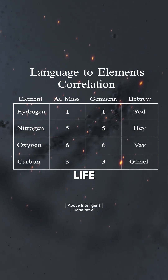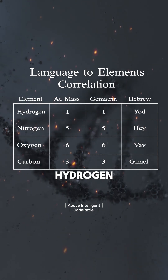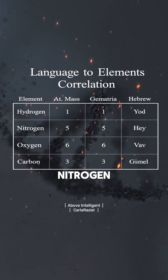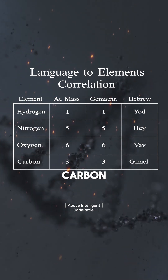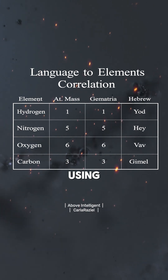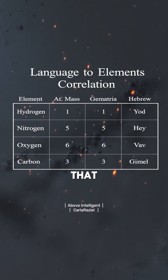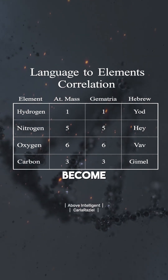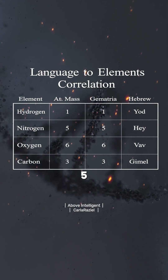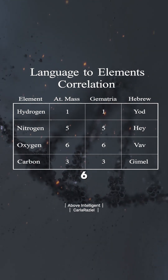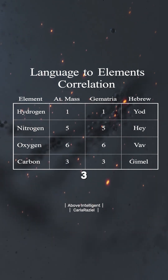DNA of any life is made of hydrogen, nitrogen, oxygen, and carbon. And using gematria, the numbers that equate to those become one, five, six, and three.